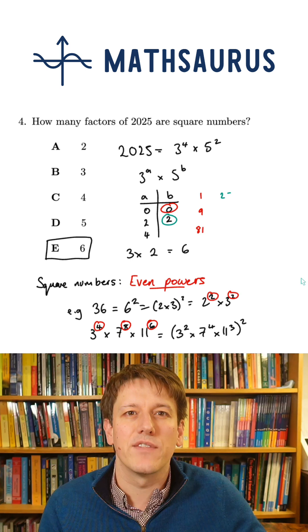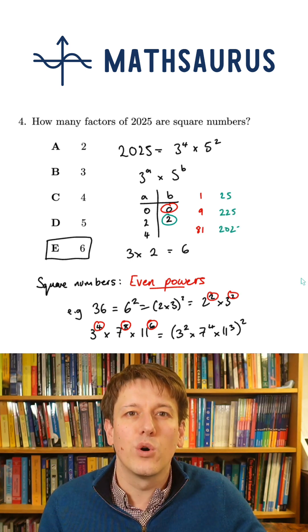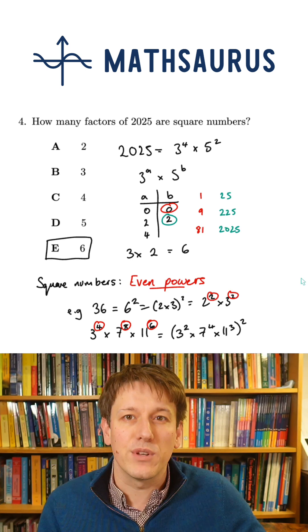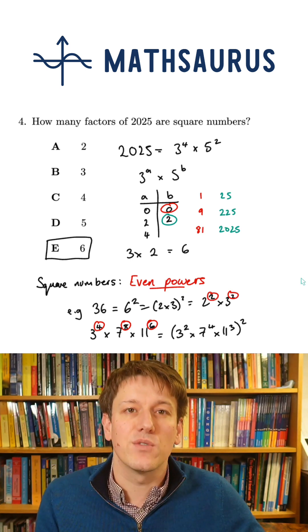And for b equals 2, where 25 is a factor, we'd have either 25, 225, or 2025 itself, which is 45 squared. But you don't actually need to write those down to solve the problem in an efficient way.